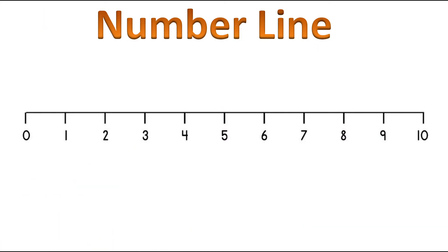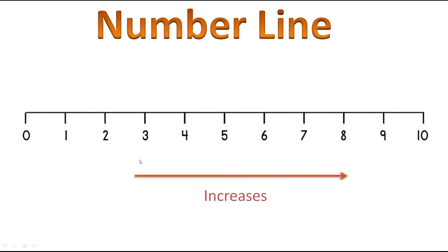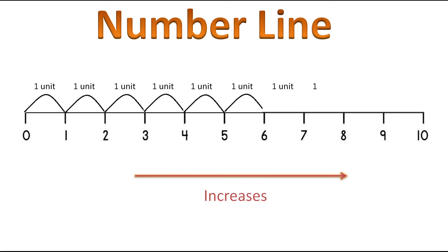First of all, let's understand what is number line. This is the number line of whole numbers as it is starting from 0. As we move towards right, the value of the numbers gets increased. And the distance between the two points like 0 and 1 or 1 and 2 remains the same and is called as unit distance. We can take this unit as centimeter, millimeter or meter.